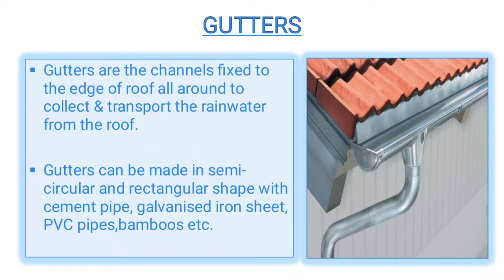Next, gutters: gutters are channels fixed to the edge of the roof all around to collect and transport the rainwater from the roof. The shape of the gutter is either semicircular or rectangular. It can be made of cement pipe, galvanized iron sheet, polyvinyl chloride pipes, or bamboo. Use of locally available material reduces the overall cost of the project.